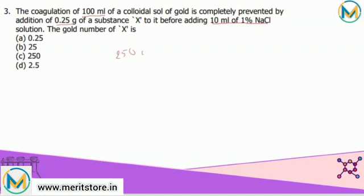So we know that 0.25 gram of X is present in 100 ml of colloidal sol of gold. By definition, gold number of X is that amount of it in milligrams - 0.25 gram is 250 milligrams - so by definition, gold number of X is that amount of it in milligrams which is present in 10 ml of colloidal gold solution. Hence in 10 ml, the amount of X present is 25 milligram, which is the gold number of X. So correct answer for this question is option B, that is 25 milligrams, gold number 25.